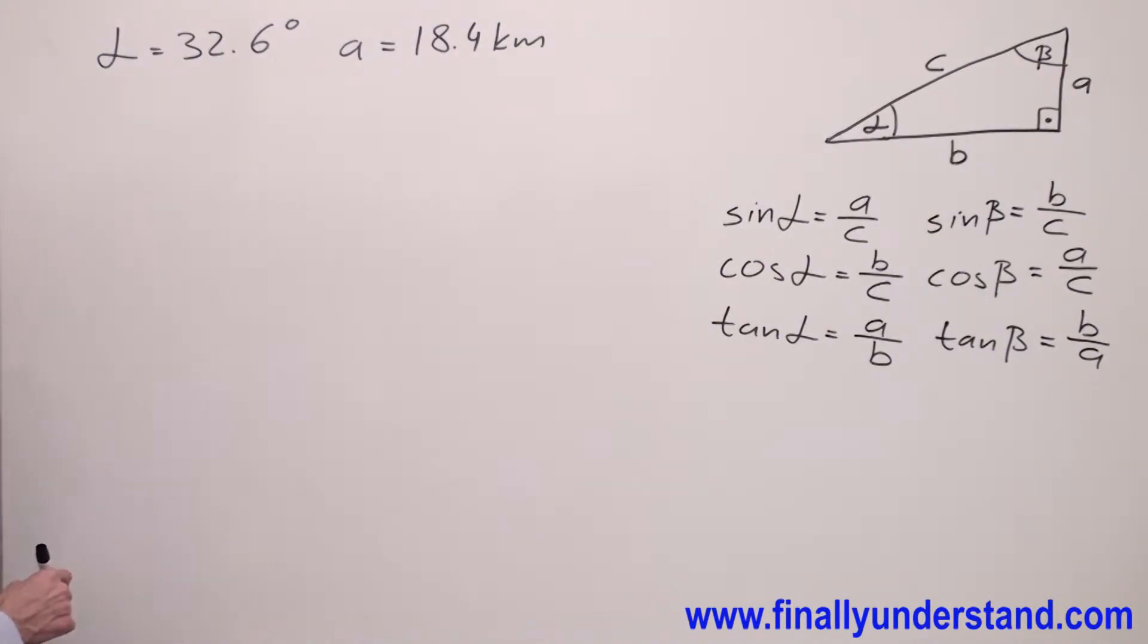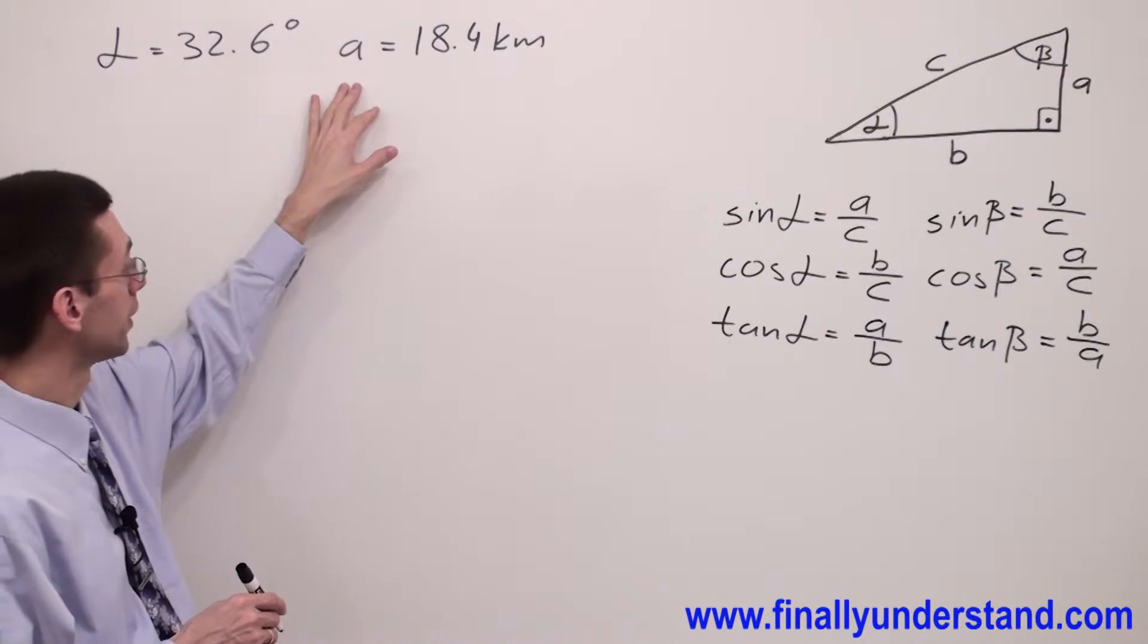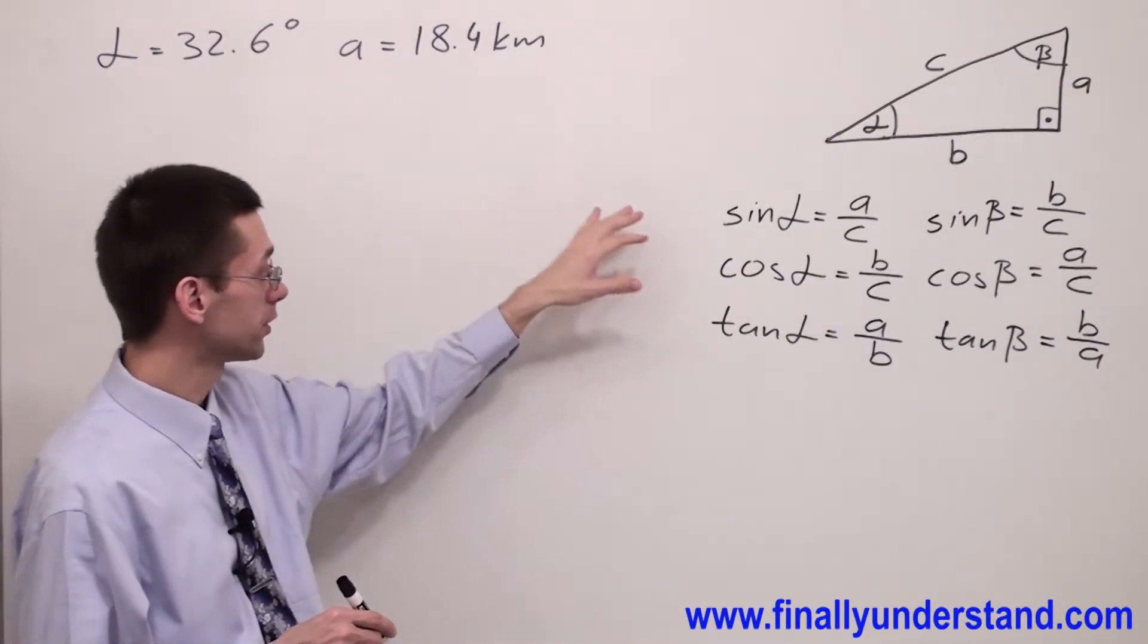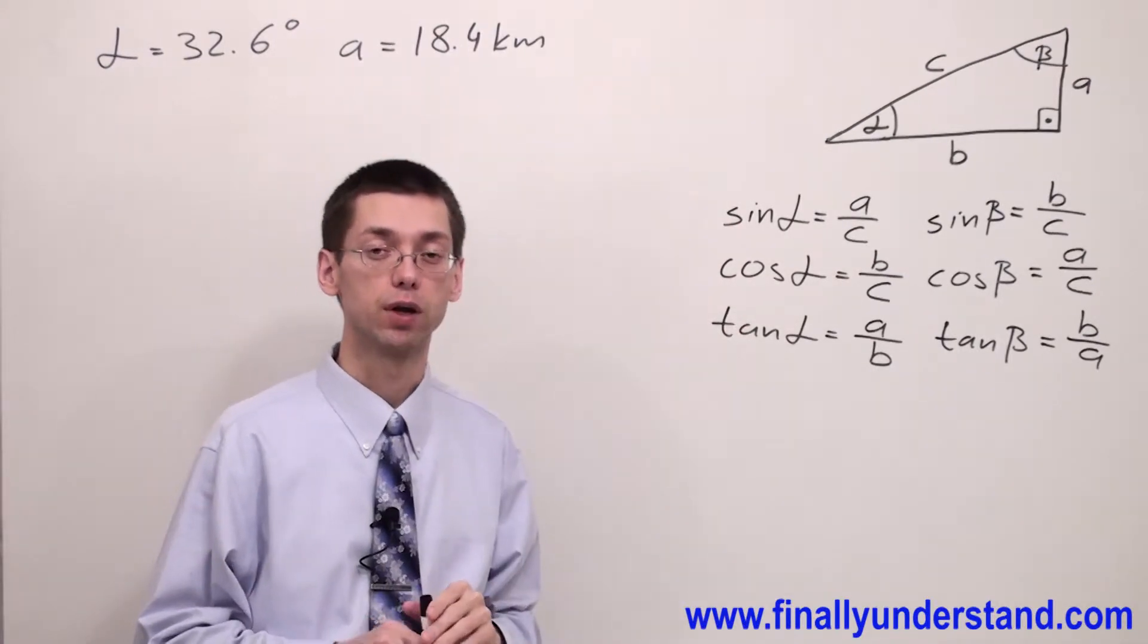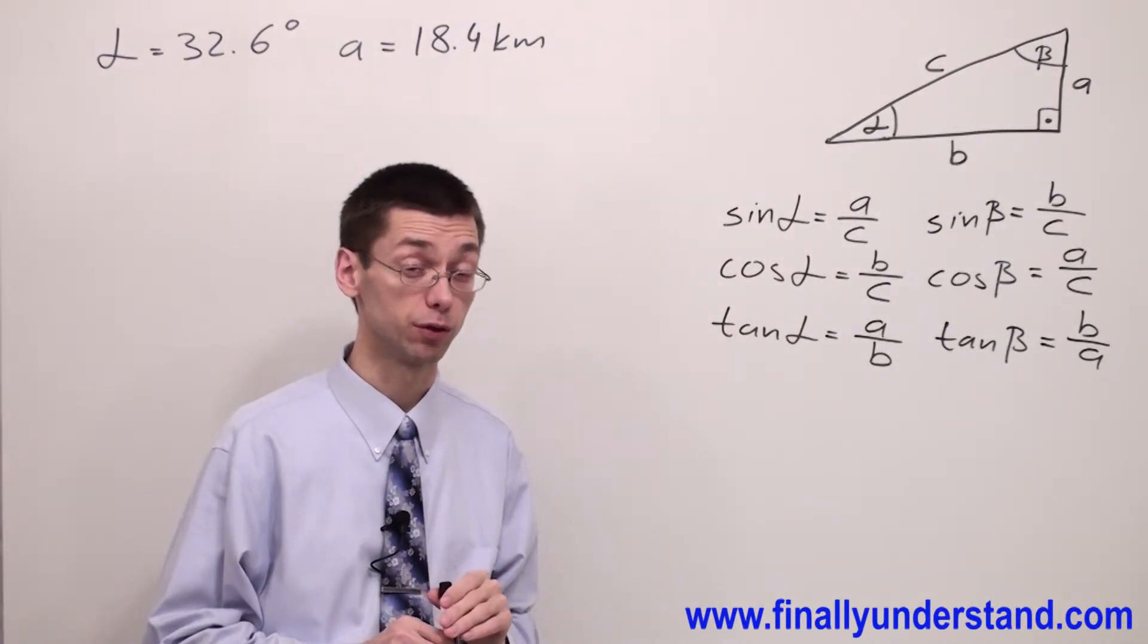This time, I'm going to look at the problem. I have alpha and I have A. Let's take a look at which formulas we can use. We're supposed to use the formula which contains two pieces of information.